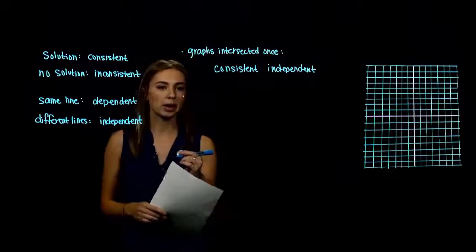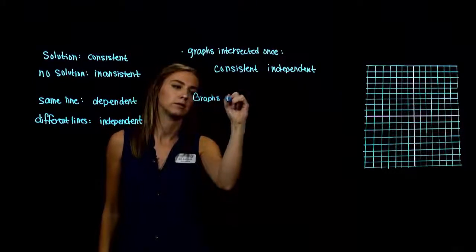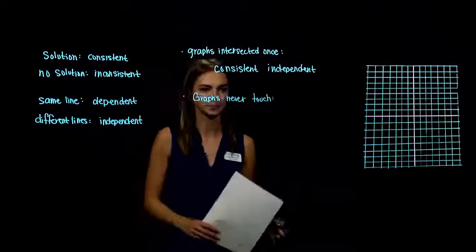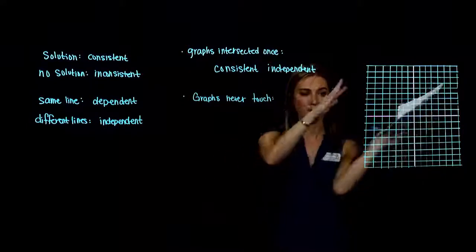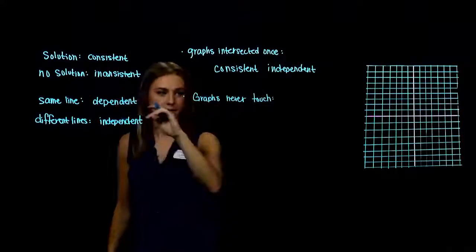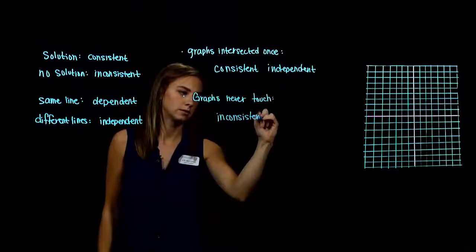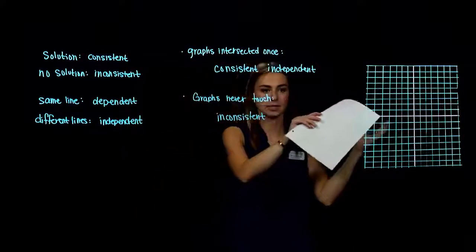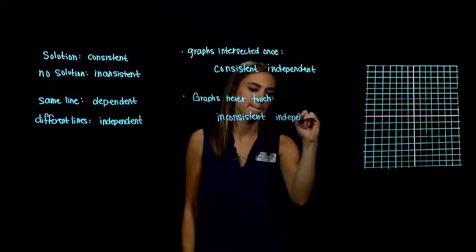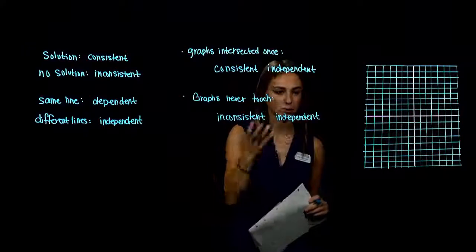Case 2: parallel lines — the graphs never intersected. No solution, so the system is inconsistent. The lines were not the same, so they are independent. Classification: inconsistent and independent.